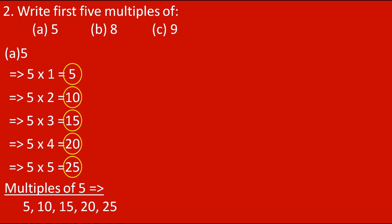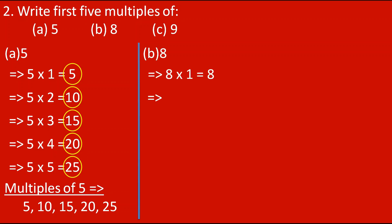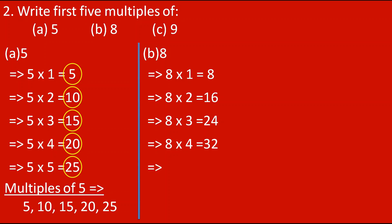Next is 8. Let's write 8's table up to 5: 8 ones are 8, 8 twos are 16, 8 threes are 24, 8 fours are 32, 8 fives are 40. So the first 5 multiples of 8 are 8, 16, 24, 32 and 40.